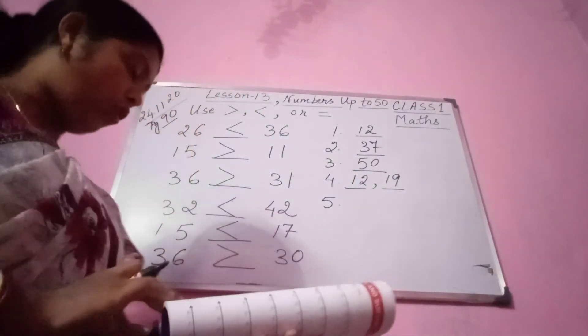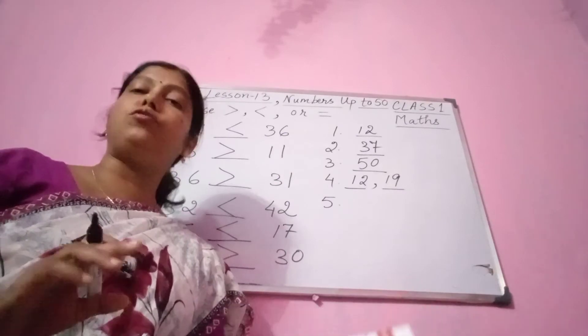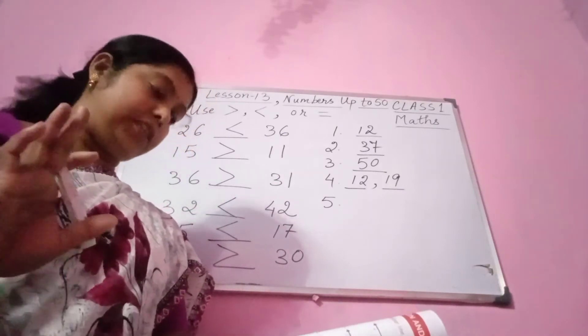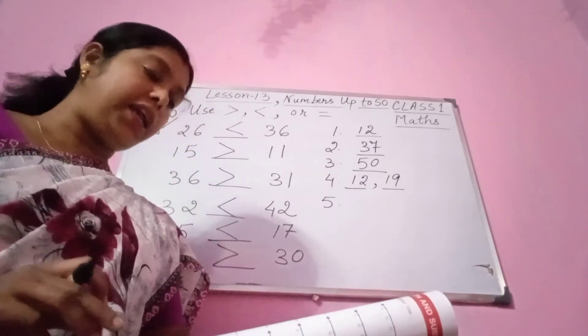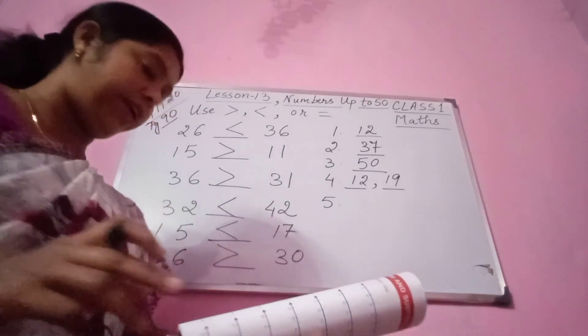Number 4: which numbers are between 10 and 20? 12 and 19. Which numbers are between 40 and 50? 42 and 45.